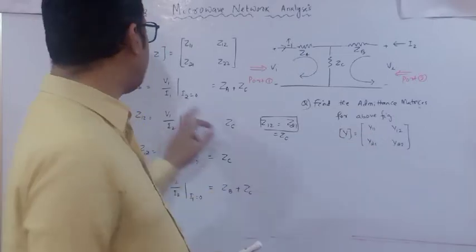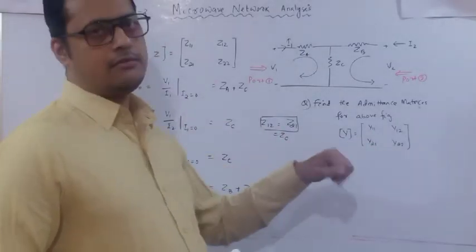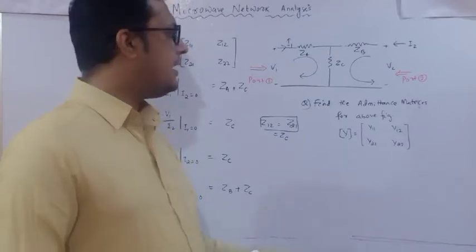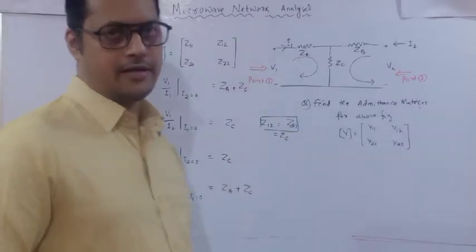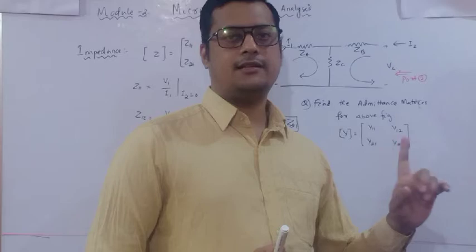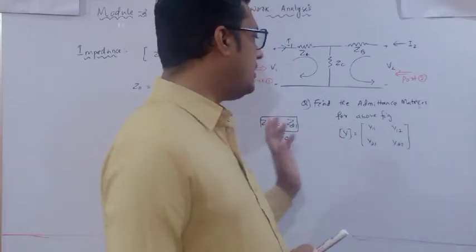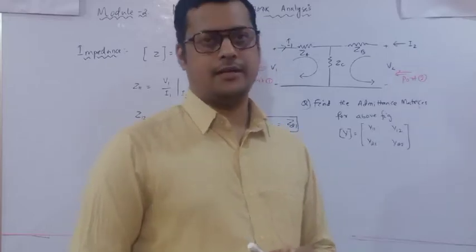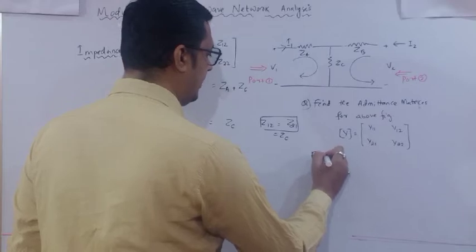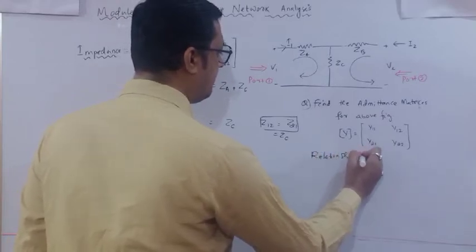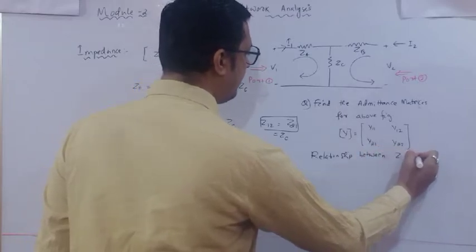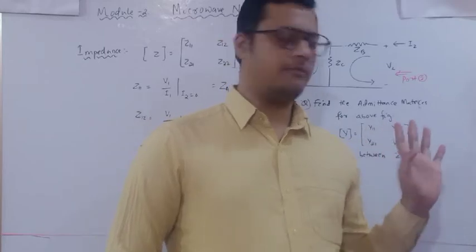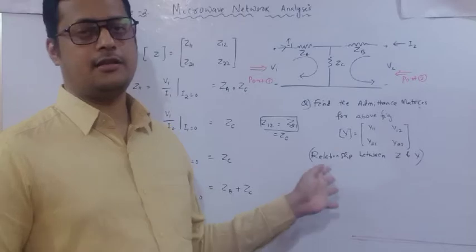If you know the relationship between impedance and admittance, you can directly substitute: Y11 equals 1/Z11, Y22 equals 1/Z22, and Y12, Y21 have a certain relationship with the impedance matrix. After substituting all values, you will get the admittance matrix. These relations are already known from network theory - just apply the relationship between Z and Y parameters.